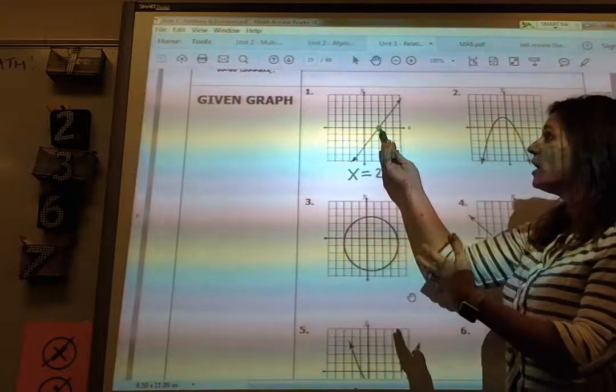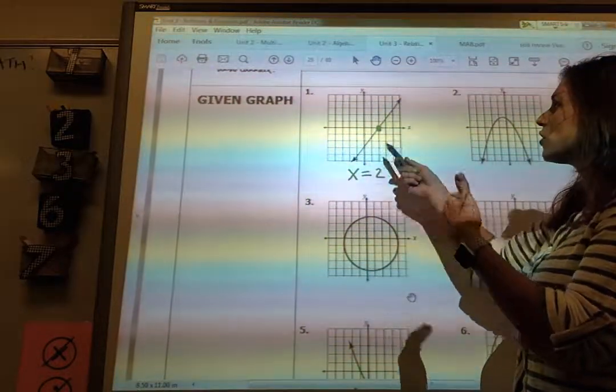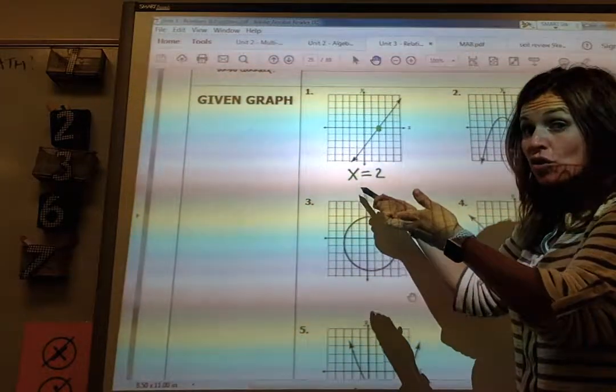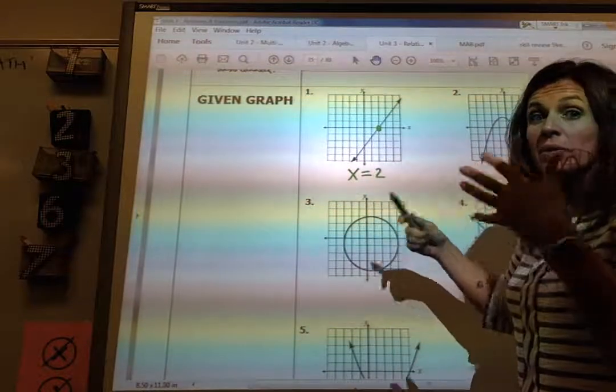So I can say the root of this function is two, the solution to this function is two, the x-intercept is two, and the zeros of this function is two. They all mean the same thing.